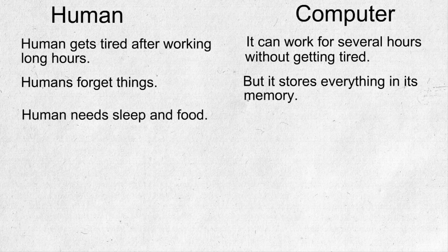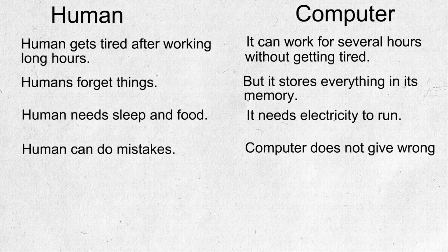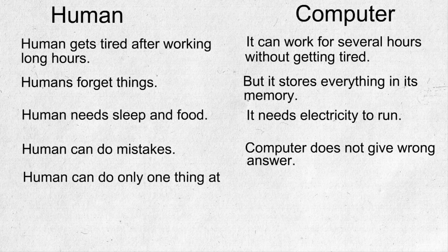Humans can do mistakes while they are working, but computers do not give wrong answers to a particular instruction or command. Humans can do only one thing at a time, but a computer can do many things at a time.